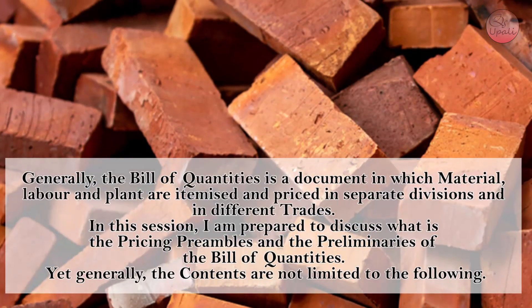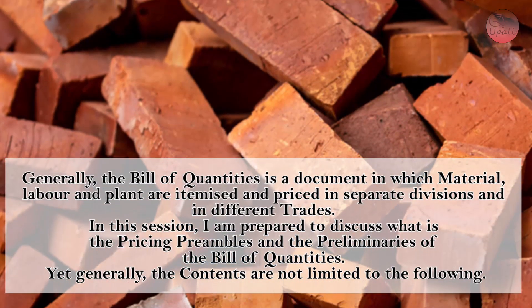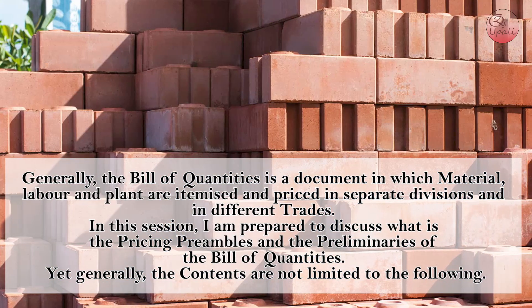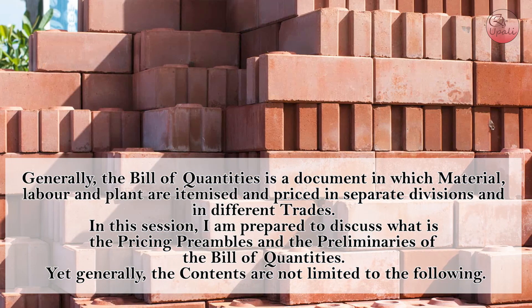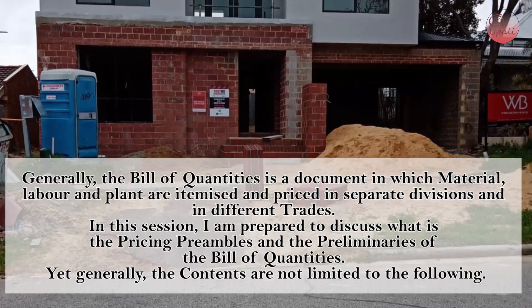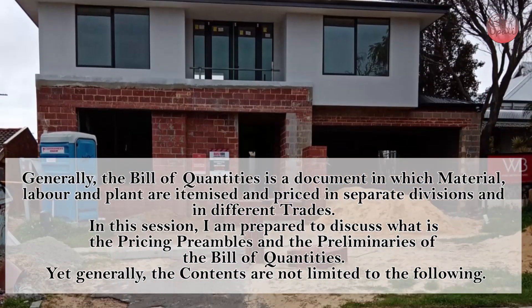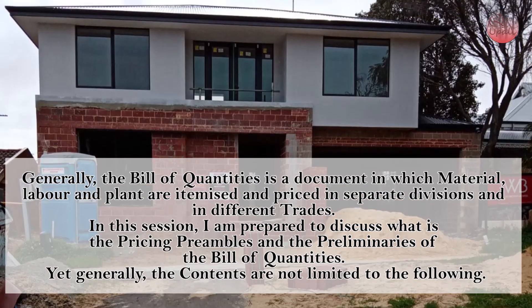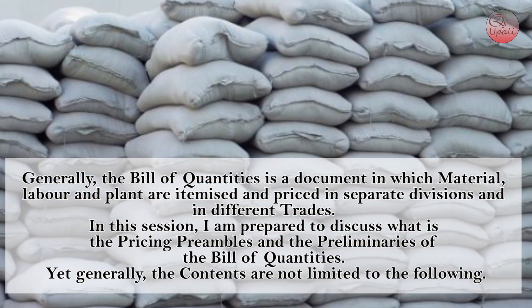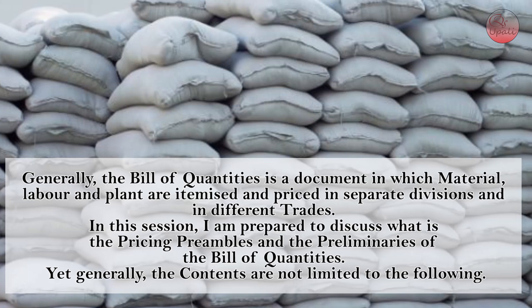Generally, the Bill of Quantities is a document in which material, labor, and plant are itemized and priced in separate divisions and in different trades. In this session, I am prepared to discuss what is the pricing preamble and the preliminaries of the Bill of Quantities.